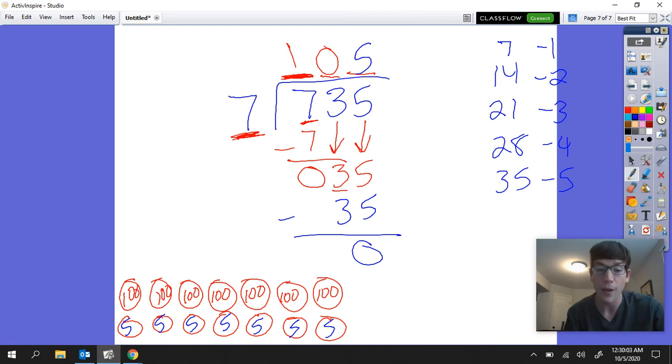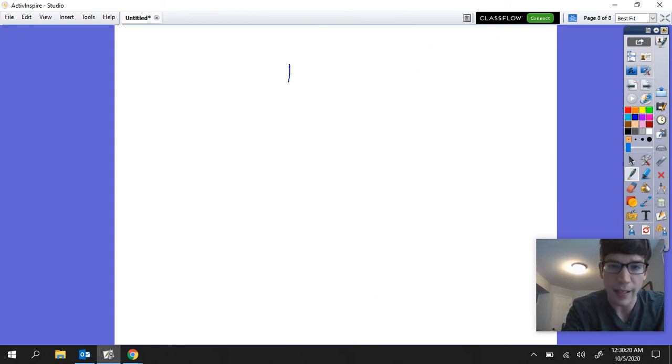So as you can see down here at the bottom we have a total of 105 that went into each group which is here. Now to check division we can always work backwards and use the opposite or the inverse operation which is multiplication. So one way I could do that is I could take 105 and I could multiply by seven.